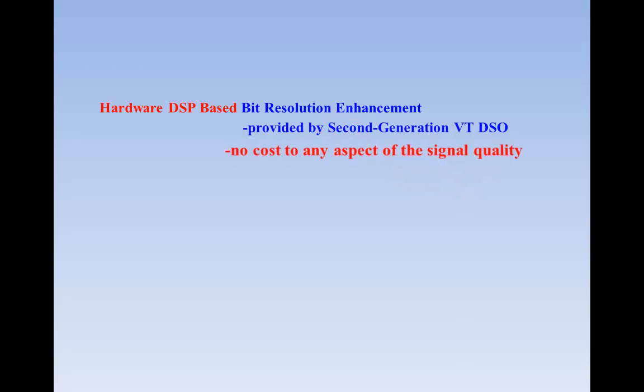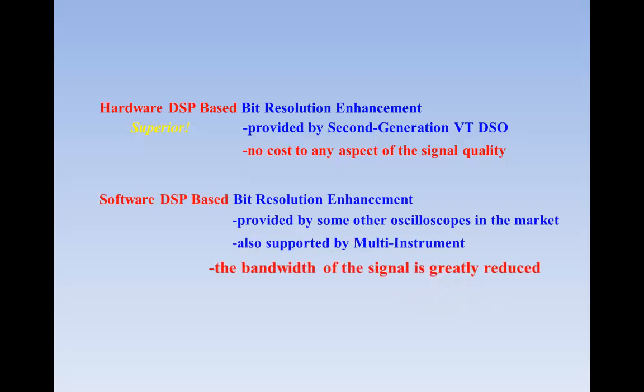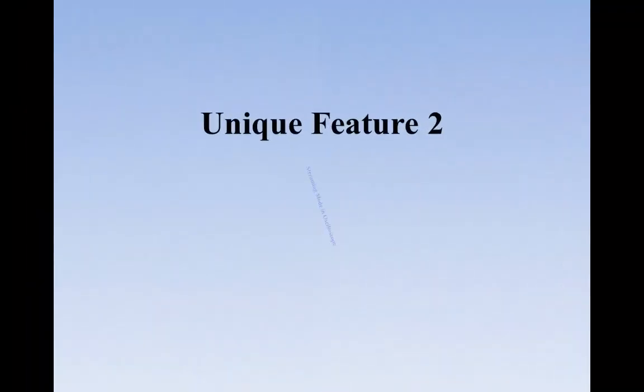In the second-generation VT DSOs, the bit resolution enhancement is implemented through hardware DSP at no cost to any aspect of the signal quality. This is superior to the software DSP-based bit resolution enhancement feature provided by some other oscilloscopes in the market, where the bandwidth of the signal is greatly reduced.